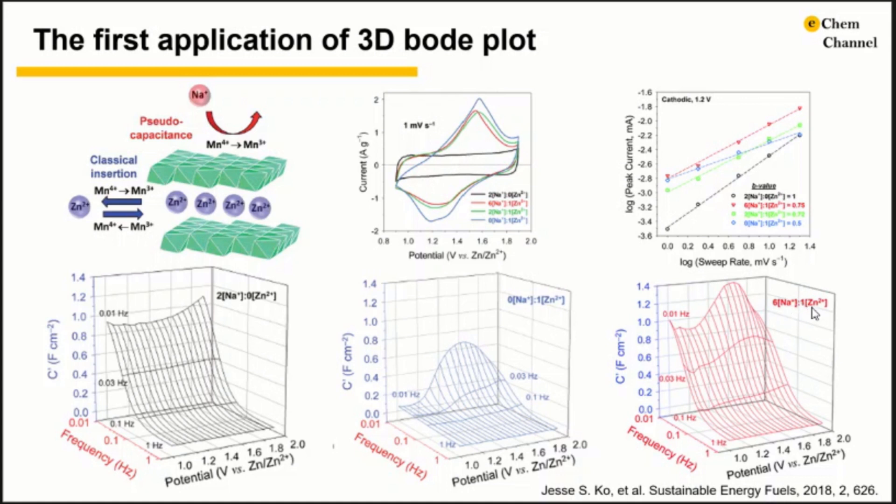When using a mixed electrolyte with 6 sodium and 1 zinc, the 3D Bode plot shows a well-developed waterfall shape, as well as a maximum point at about 1.5V at low frequency. This gives a very clear illustration of the presence of both pseudocapacitive and battery type. And the battery type becomes a dominating mechanism at potential above 1.3V.